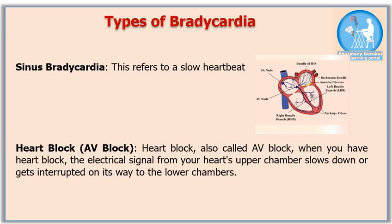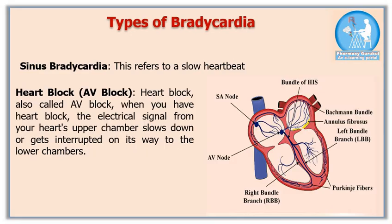There are two types of bradycardia: sinus bradycardia and heart block. Sinus bradycardia occurs due to a defect in the SA node — when the SA node produces fewer electrical impulses, this is referred to as sinus bradycardia. Heart block is also known as AV block.